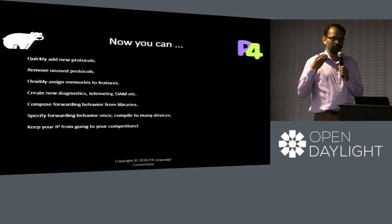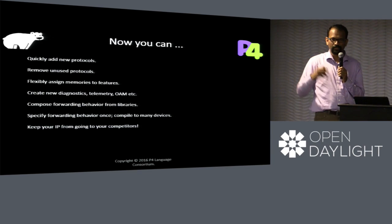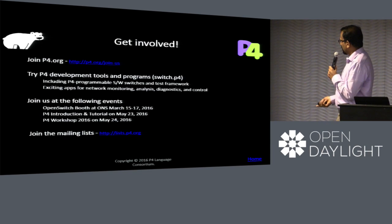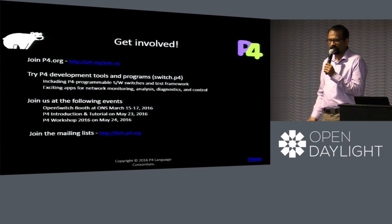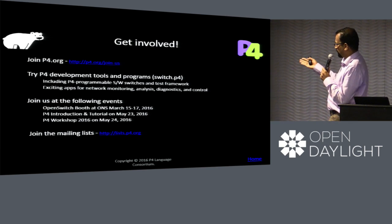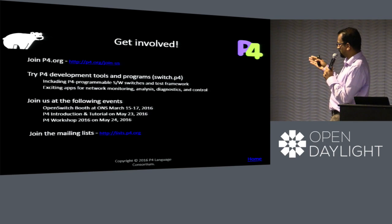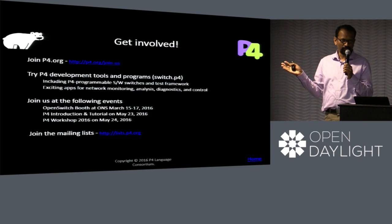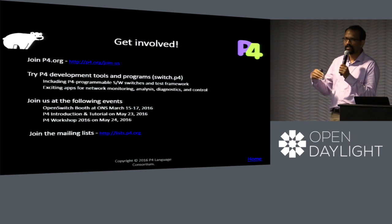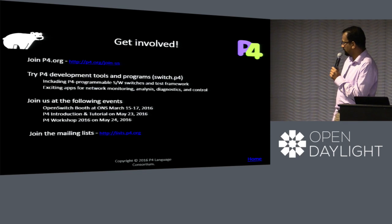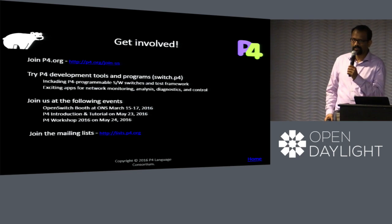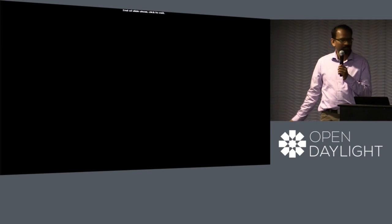So if you have all of this, what can you do? Essentially it gives you ownership of the forwarding pipeline and the IP in it. You can keep your IP from going to competitors and modify your network whenever you want. It gives control to the end user and helps networks be designed top-down rather than bottom-up. Ways to get involved: join P4.org, try out the software on GitHub, join upcoming events — there's an OpenSwitch booth at ONS demonstrating a P4 pipeline soft switch controlled by OpenSwitch, and a P4 workshop coming up. Join the mailing list — that's where all the information gets disseminated.